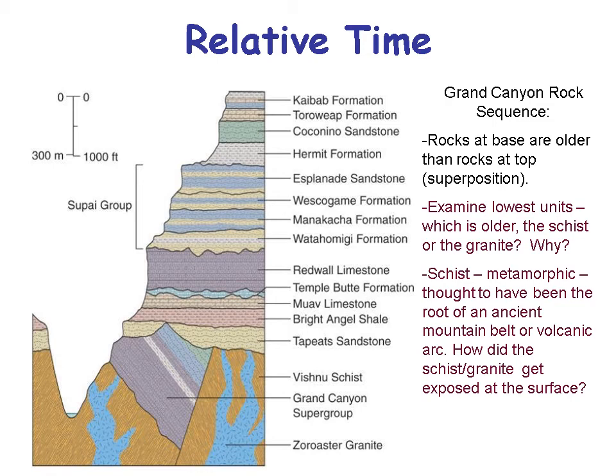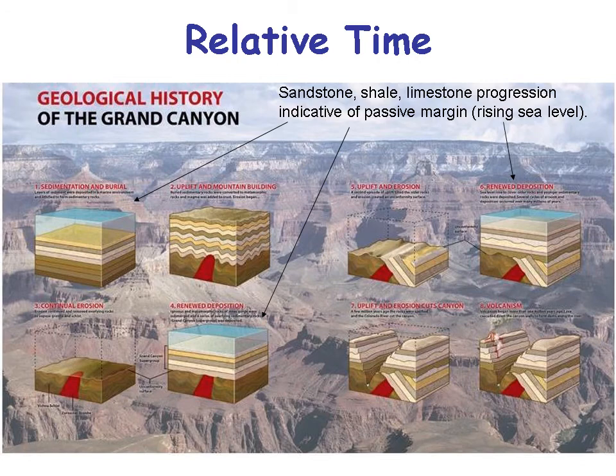Let's look at the Grand Canyon as an example of relative time. Rocks at the base are older than rocks at the top by superposition. At the lowest units you see granite and schist — the Vishnu Schist is a metamorphic rock, and granite is an igneous rock. These metamorphic and igneous rocks are thought to be the roots of an ancient mountain chain or volcanic arc that got exposed to the surface by erosion and uplift.